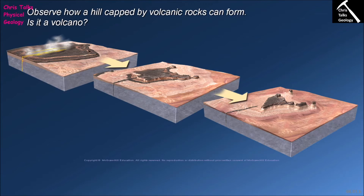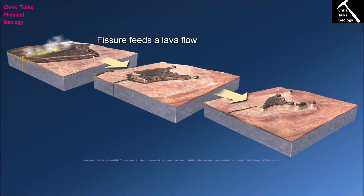Now let's think about what we classify as a volcano and what we do not. In this fissure eruption example, you can see the crack on the surface marked out in yellow — this is the volcanic fissure and the point where lava exits. The lava spreads out as a lava flow, visible here with its black colour. Over time, the volcano becomes extinct, any remaining magma cools and solidifies, and the fissure becomes preserved as a dike.